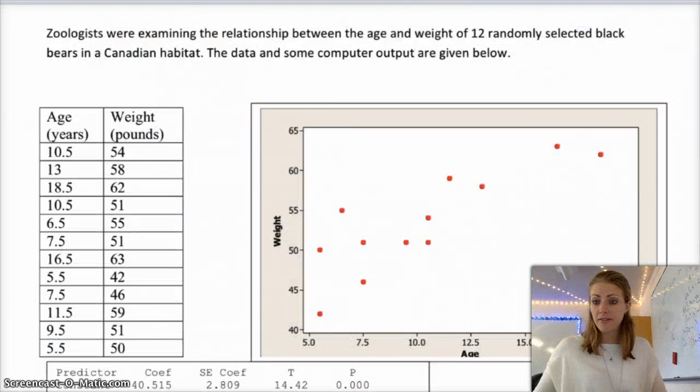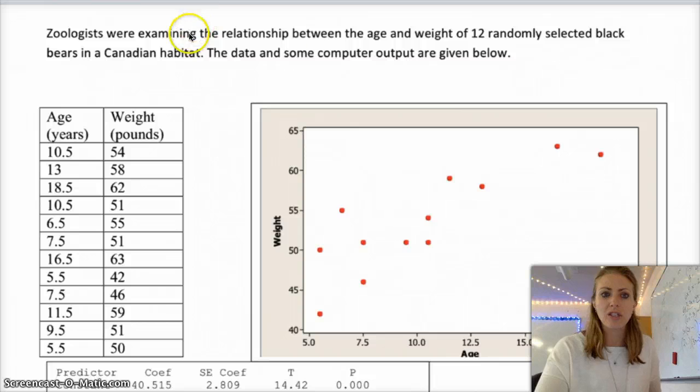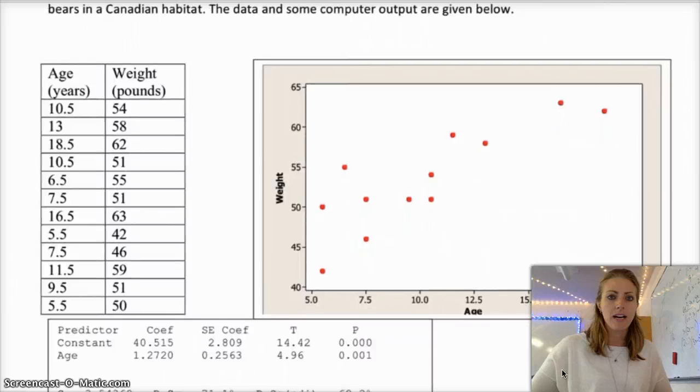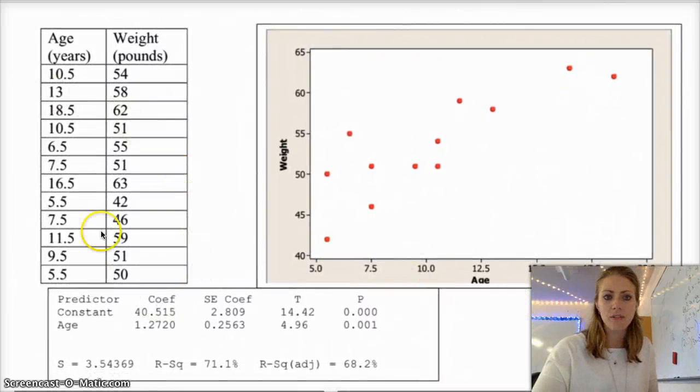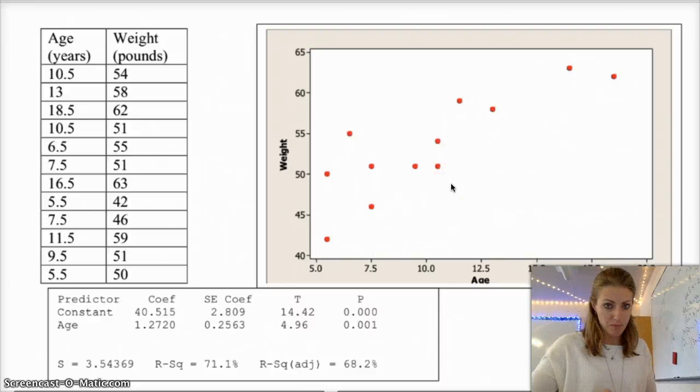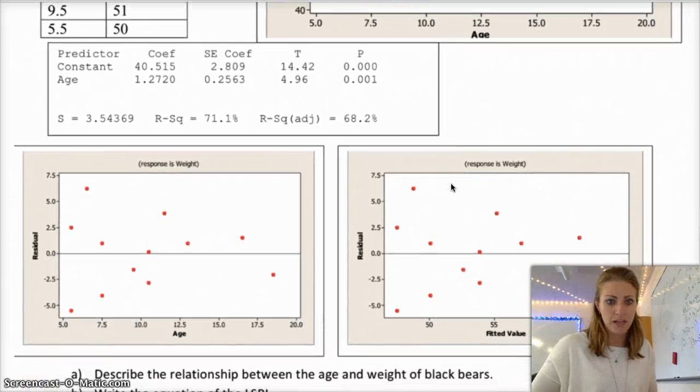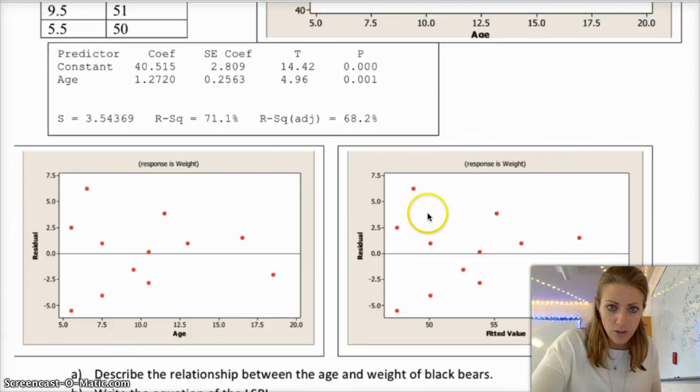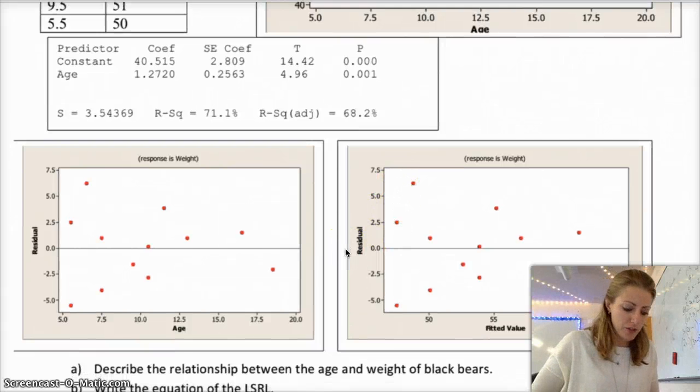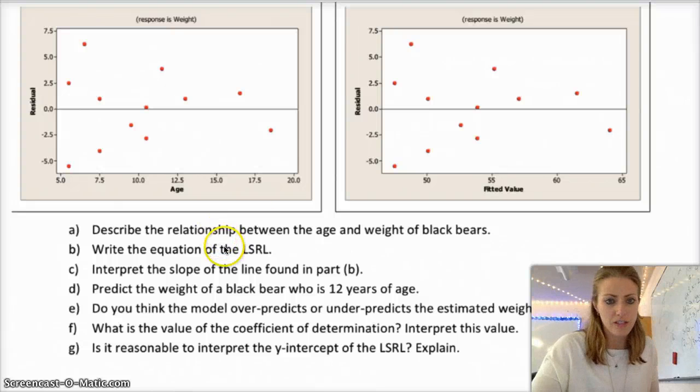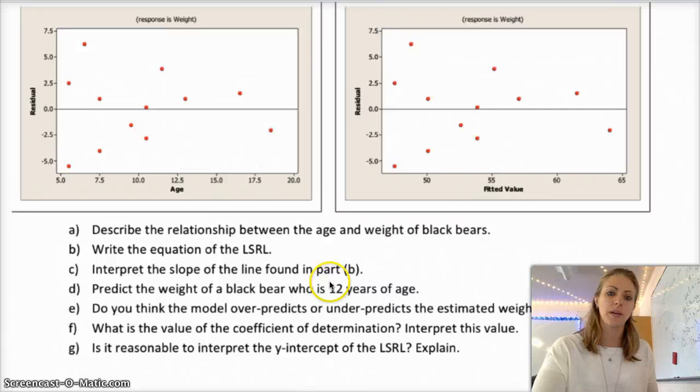So the next example is the same kind of deal. So you have zoologists examining the relationship between the age and weight of 12 randomly selected black bears in a Canadian habitat. And here's the data of some of, you know, some of their research. So you've got the age of the bears and then their weight in pounds. So here's your raw data, but it also gives you a scatter plot. It gives you computer output, and it gives you the residual plot as well. So the questions are describe the relationship, write the equation of the LSRL, interpret the slope, predict the weight of a black bear who's 12 years old. So, you know, you can answer those questions. So I'm not going to, like, explain these, but I'm going to write the answers down. So again, if you're not 100% sure on this stuff, try it, check your answers, make sure you do okay.